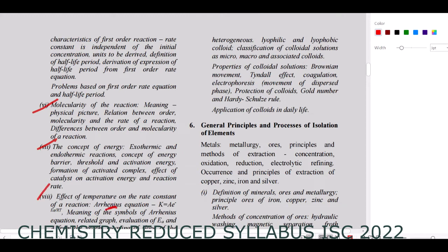The points removed from Chemical Kinetics are collision theory and the mechanism of reaction — including various types of reaction mechanisms. Both of these are cut from the chapter.